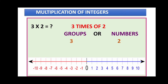Let us see this through a number line. We know how to construct a number line for integers: positive numbers to the right side of zero and negative numbers to the left side of zero. Whenever you are multiplying on the number line, you have to start at zero.